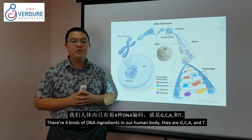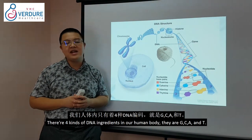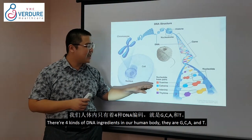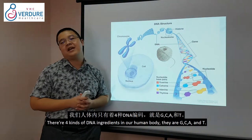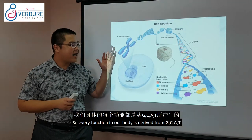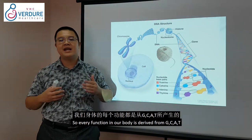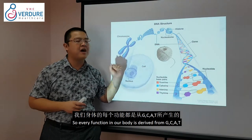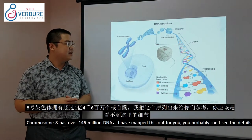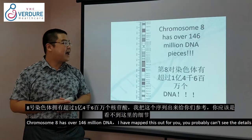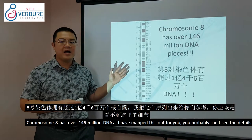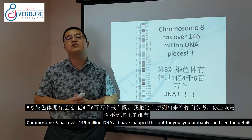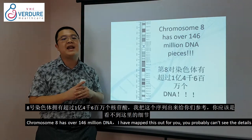There are only 4 genetic ingredients in our human body: G, C, A, and T. Every function in our body is derived from GCATs. Chromosome 8 has over 146 million DNA base pairs.